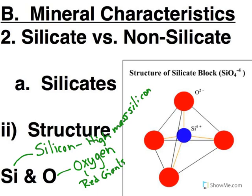Here we see the silicate structure. You've got one silicon atom and four oxygen atoms all combined together to create one silicate. And then silicates in general have other things attached to these to create the individual minerals, with the exception of quartz. Quartz is purely silicate.